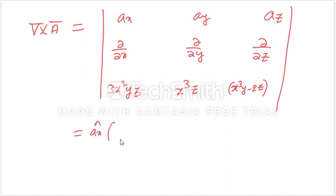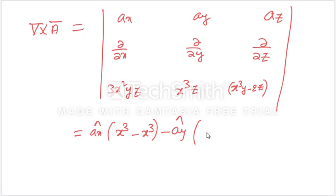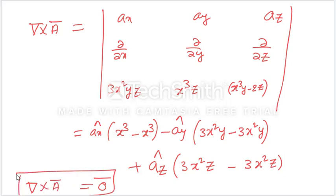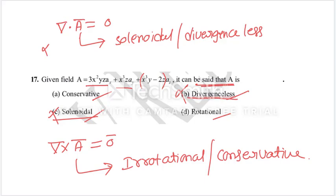Expanding the determinant: x-cap into x³ minus x³, minus a y-cap into x³ minus 3x²y, plus a z-cap into 3x²y minus 3x³ - this gives zero. So del cross A equals zero, which means we can say it is irrotational or conservative.